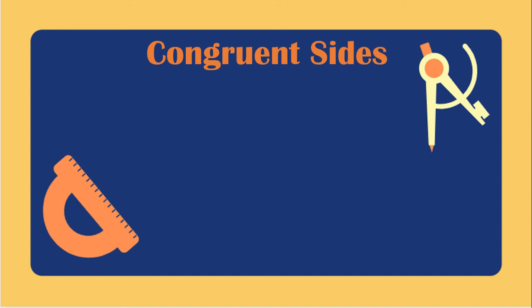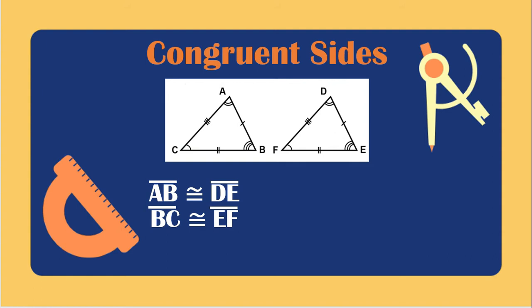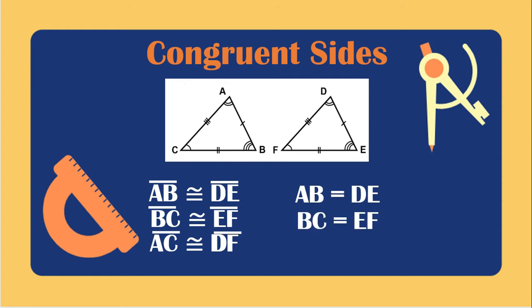We will identify the congruent sides of these two triangles. The side with one tick mark: AB is congruent to DE. The sides with two tick marks: BC is congruent to EF. And the last one: AC is congruent to DF. If we change the congruent symbol to an equal sign, we have AB equals DE, BC equals EF, and AC equals DF, using the measurement of each side.